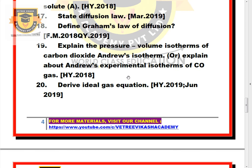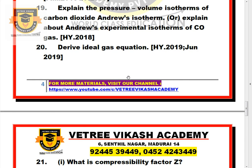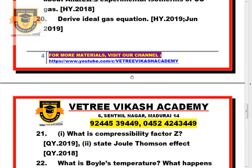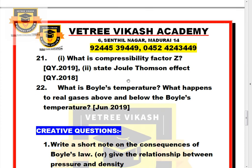Question 19: Explain the pressure-volume isotherms of carbon dioxide — Andrews isotherm — or explain about Andrews' experimental isotherm of CO₂ gas. Question 20: Derive the ideal gas equation. Question 21: What is the compressibility factor isotherm? Question 22: State the Joule-Thomson effect. What is Boyle's temperature? What happens to real gases above and below Boyle's temperature?